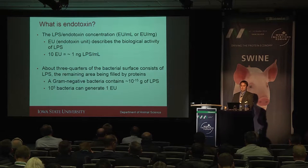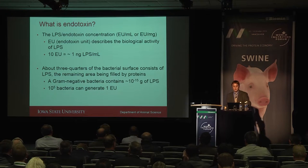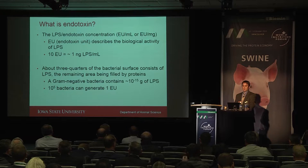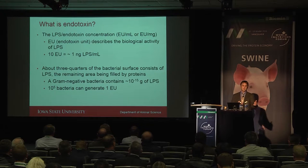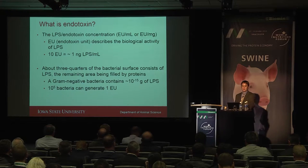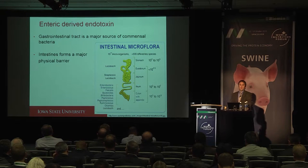When we talk about endotoxin we use endotoxin units — roughly 10 endotoxin units per nanogram of LPS per mL, though this can vary by country. One gram-negative bacterium contains about 10 to the minus 15 grams of LPS, so about 10 to the 5 bacteria would generate approximately one endotoxin unit, though this is bacteria-specific.